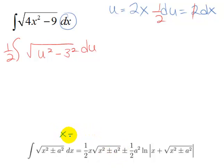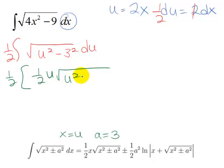The x down here is going to be u and the a is going to be 3. As I apply this, I have the 1/2 out in front, and then I have 1/2 x, which in this case is u, and then the square root of u² minus 3².